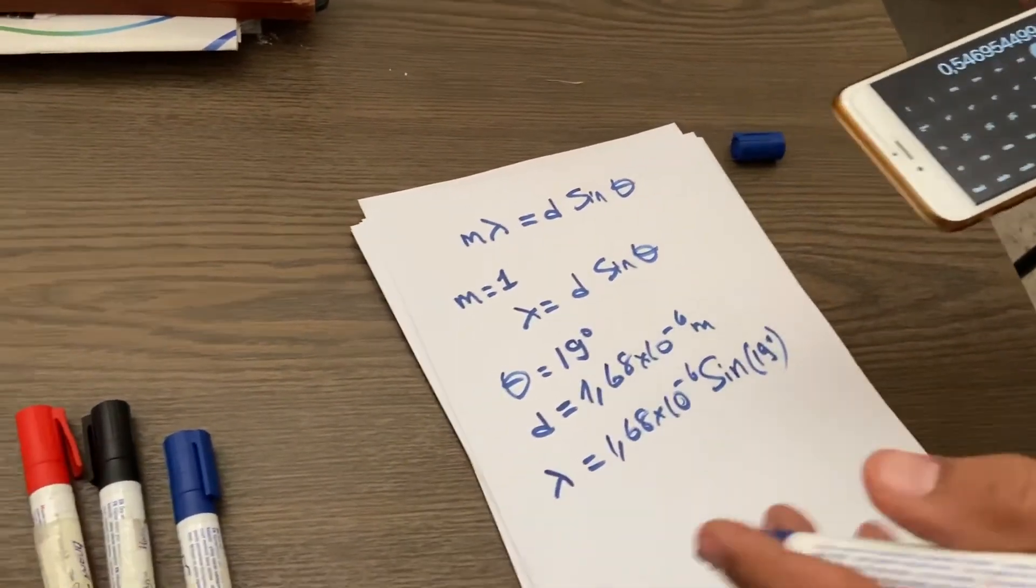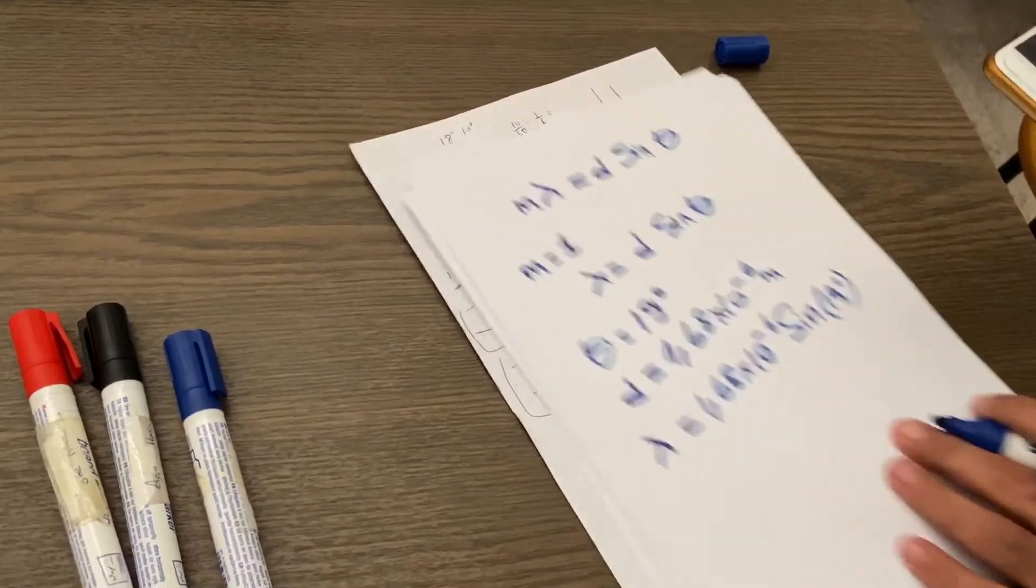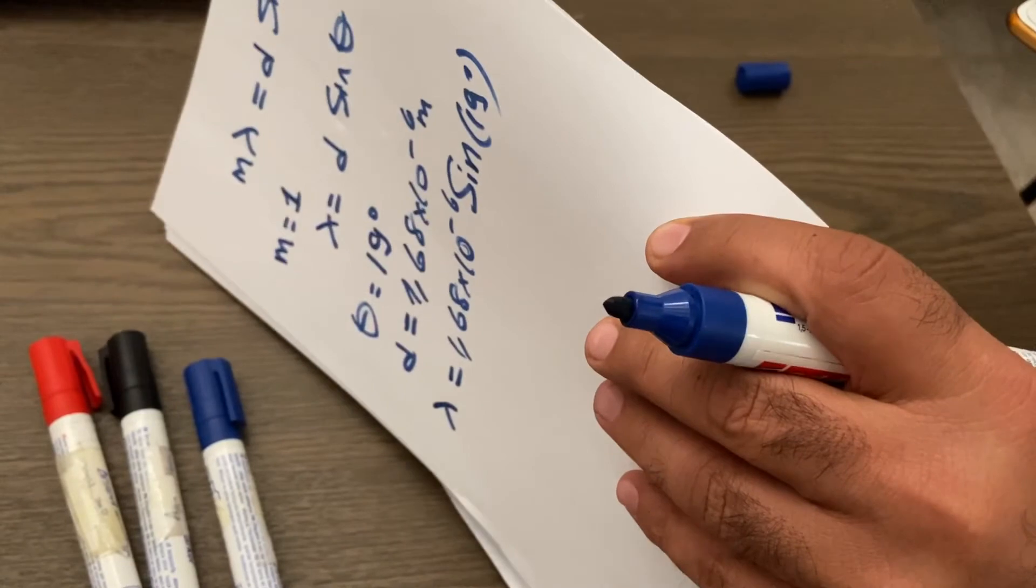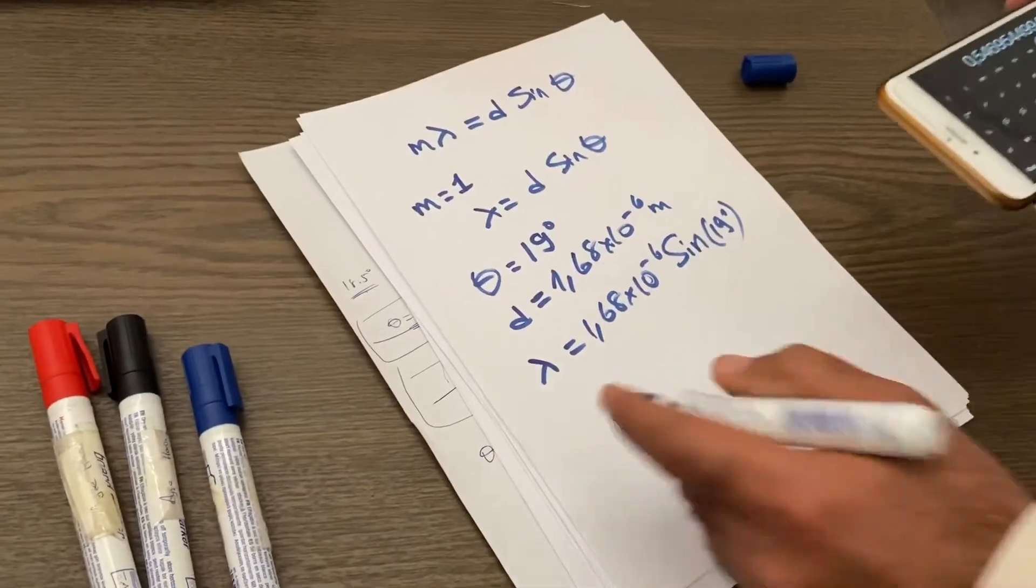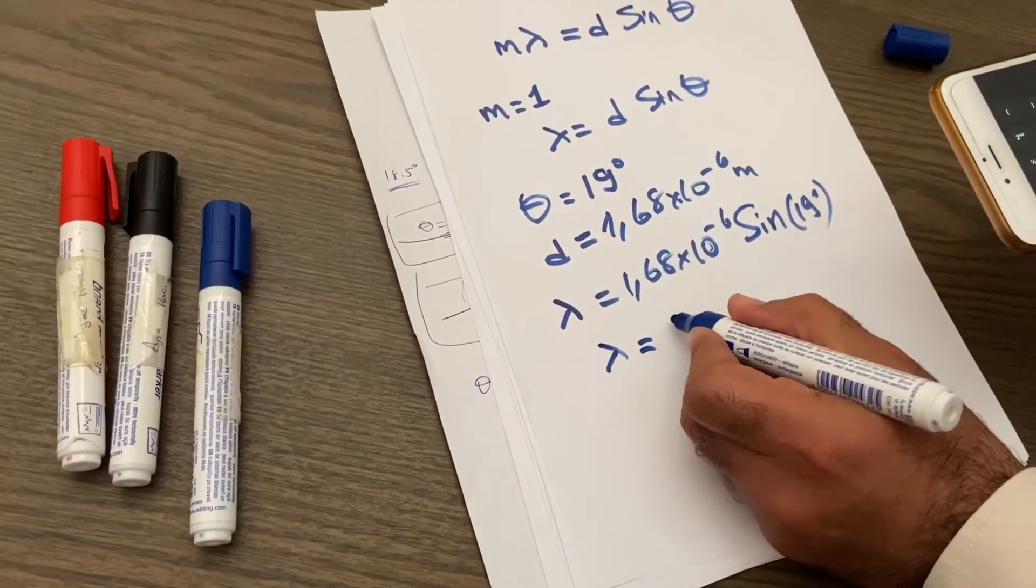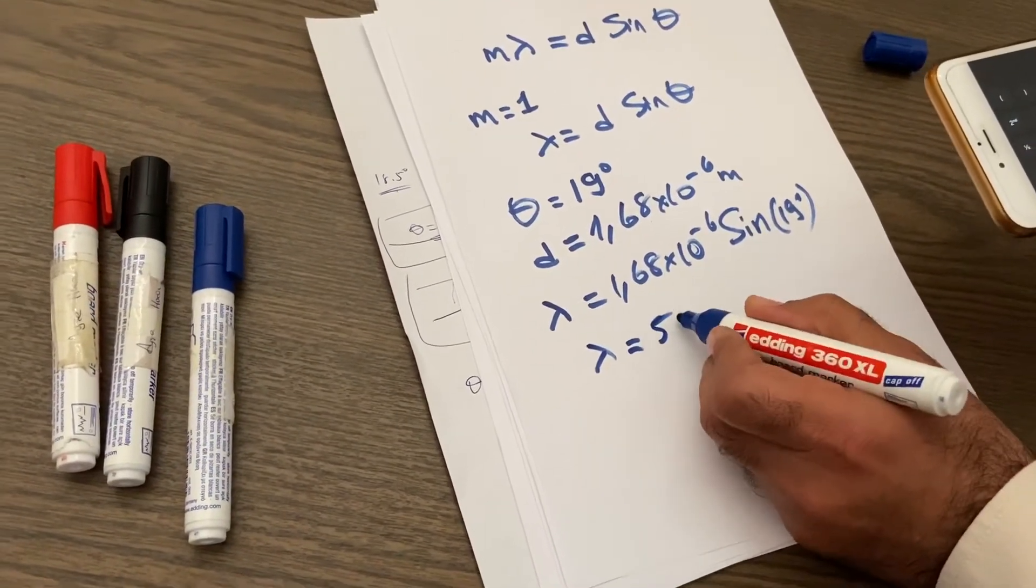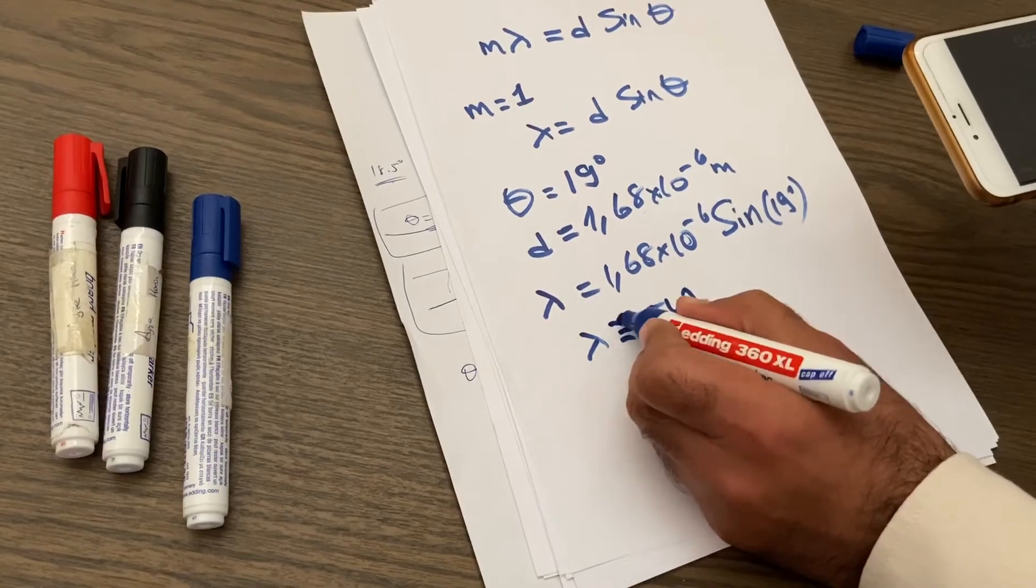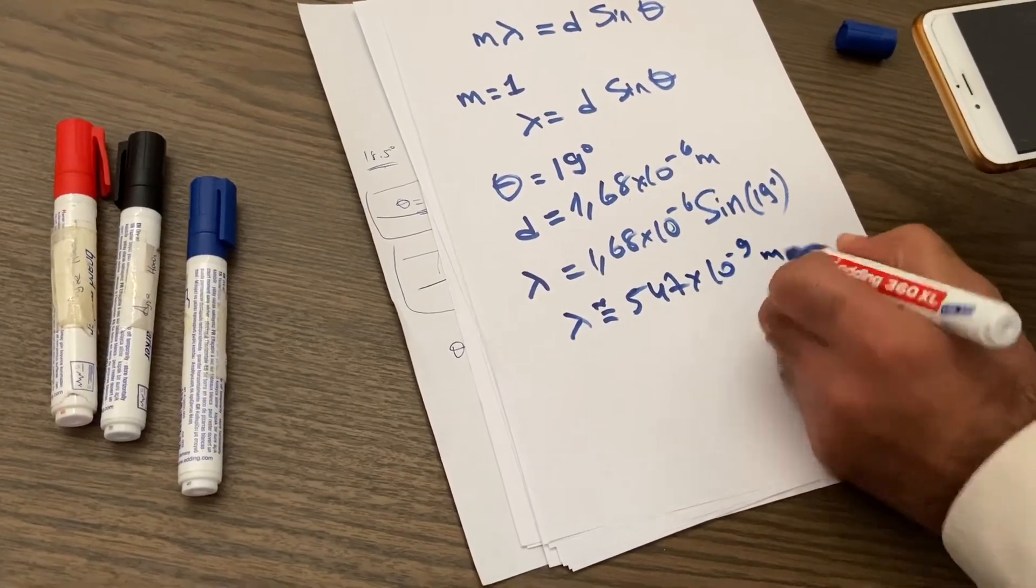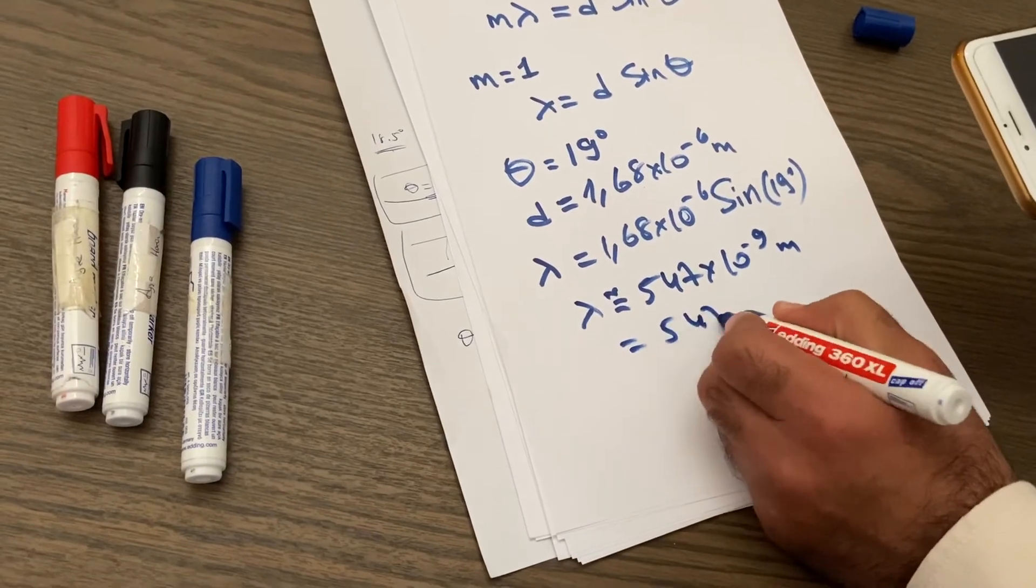Forty-seven, right? Let me check the calculation we did before. It is lambda equals approximately five four seven nanometers.